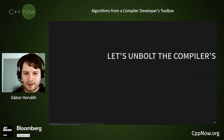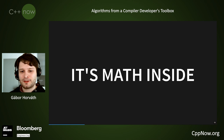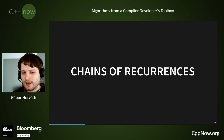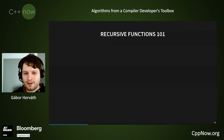For the next part of the talk, let's unbox the compiler's lid and see what's inside. Spoiler alert: it's math, but don't be afraid of it. It's very simple math, very easy to understand, and it has unreasonable effectiveness in carrying out certain tasks. The theory I will talk about today is called chains of recurrences.